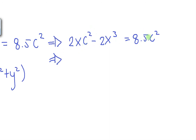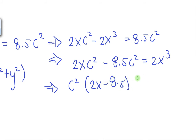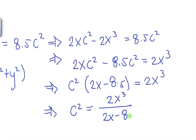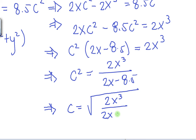Now let's move terms and simplify. Distributing gives 2XC squared minus 2X cubed equals 8.5 C squared. Moving the 8.5 C squared to the left: 2XC squared minus 8.5 C squared equals 2X cubed. Factorizing gives C squared times (2X minus 8.5) equals 2X cubed. Dividing, we have C squared equals 2X cubed divided by (2X minus 8.5), which gives us C equals the square root of 2X cubed divided by (2X minus 8.5). That is our answer! Thanks again for watching — please subscribe and share with your friends.